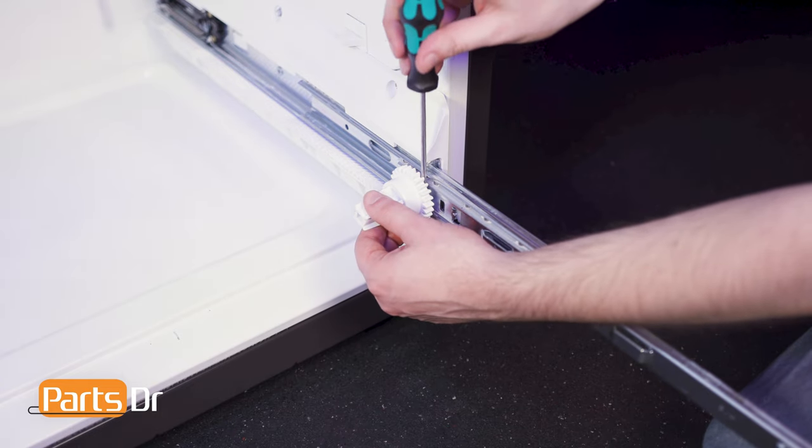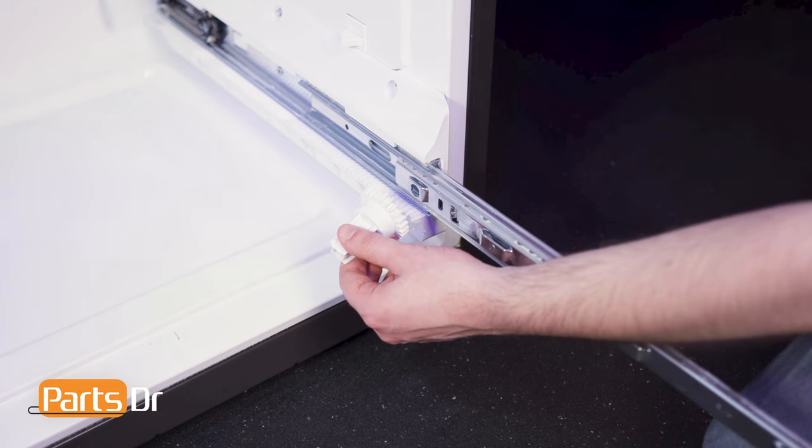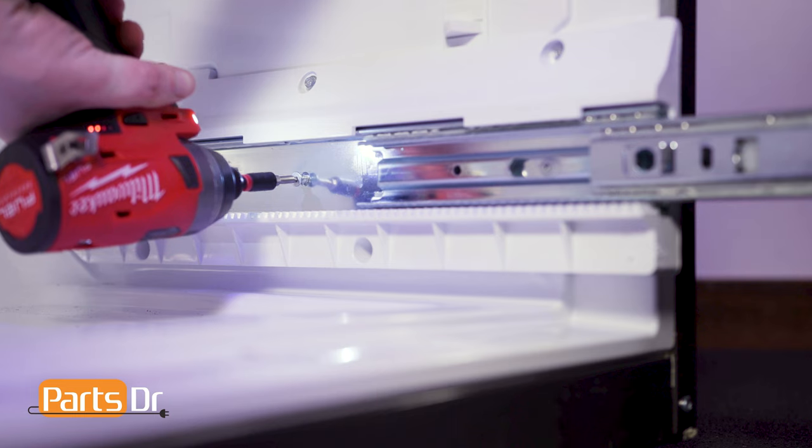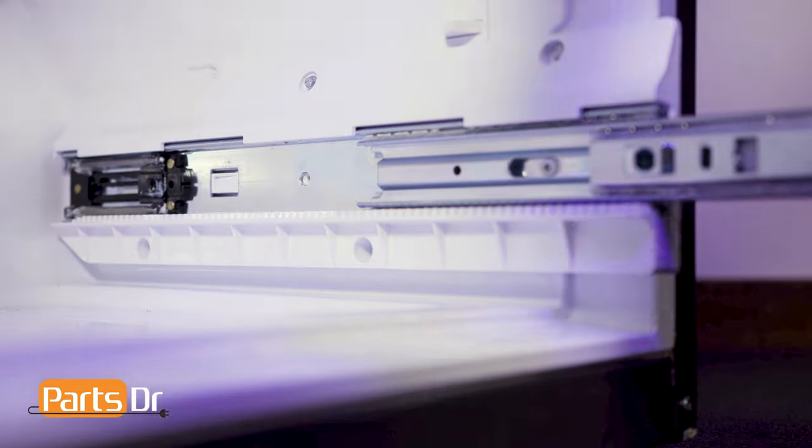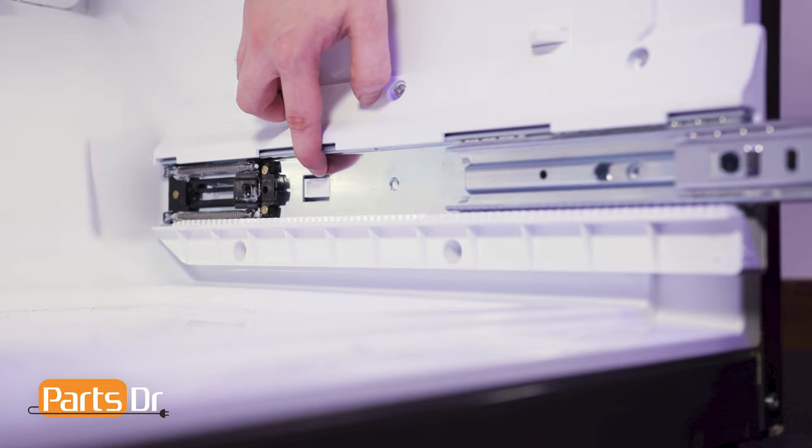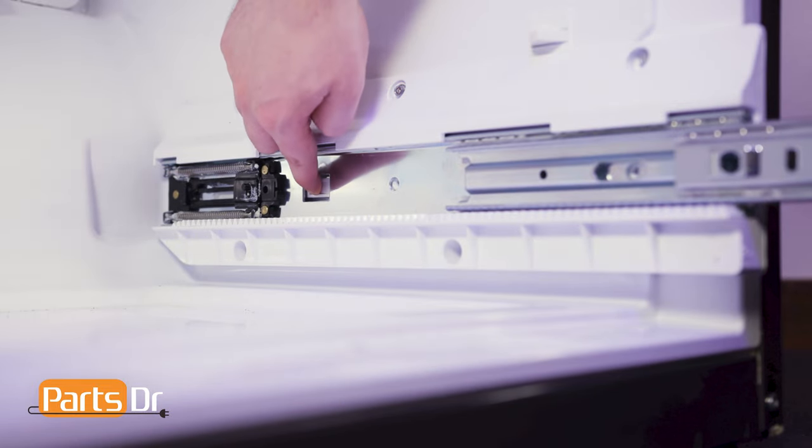With a flat head screwdriver, gently pry the pinion gear away from the drawer glide. Then using a T20 Torx bit, remove the two screws holding the drawer glide in place. Depress the retaining tab and pull the glide away from the slide holder.